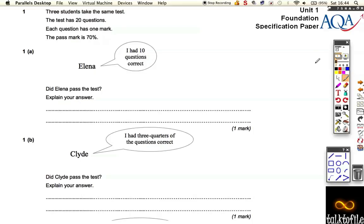So let's look at question one. It says that three students take the same test. The test has 20 questions, and each question has one mark. To pass the test, you need to get 70%. We need to find out about these three people - Eleanor, Clyde, and Alfie - for part C, to find out whether things are true or false.